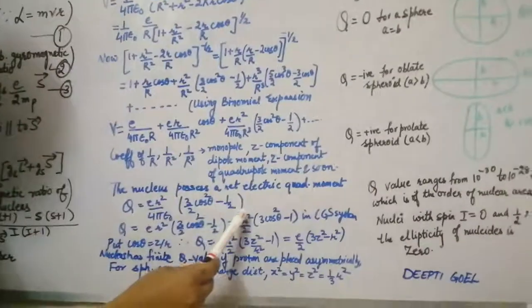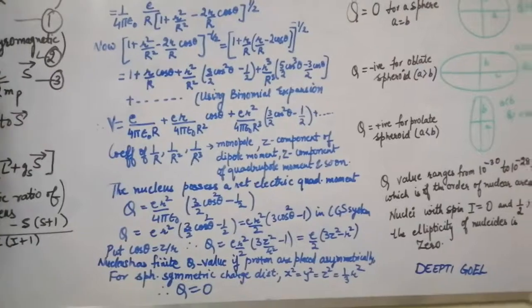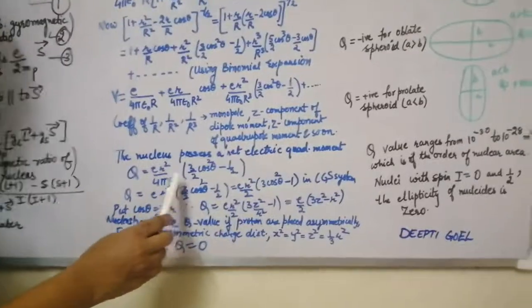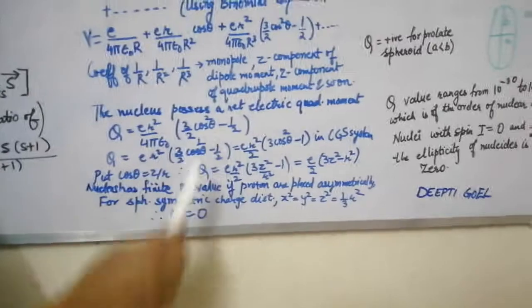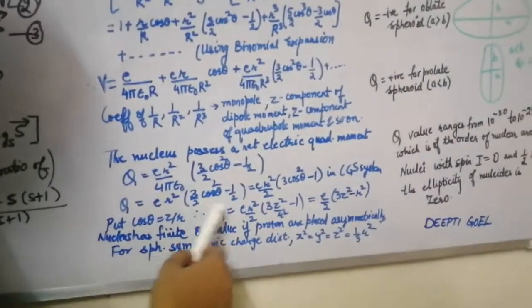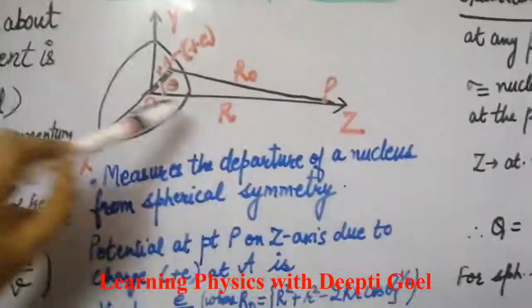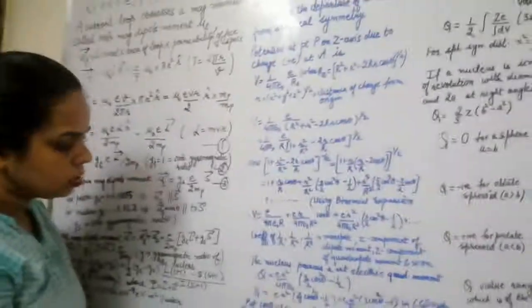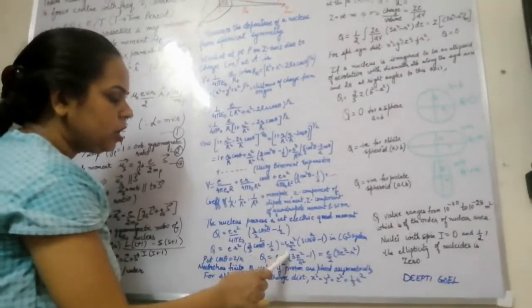Writing the coefficient of 1/R³ as Q (the quadrupole moment): Q = e·r²·(3cos²θ − 1)/2 in MKS. In the CGS system, 1/(4πε₀) = 1, so Q = e·r²·(3cos²θ − 1)/2. Taking ½ common: Q = (e·r²/2)·(3cos²θ − 1). Since cosθ = z/r in the diagram, substituting gives Q = (e/2)·(3z² − r²).